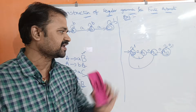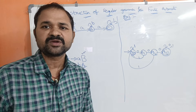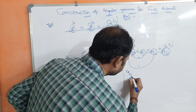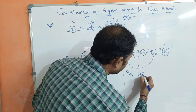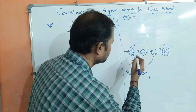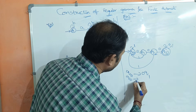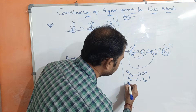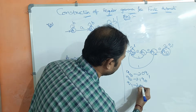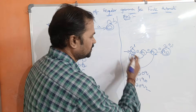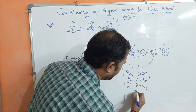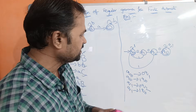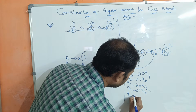We have to write regular grammar from this finite automaton. Regular grammar means by default it is right-linear grammar. So: q0 on 0 goes to q1, giving production q0 implies 0q1. q0 on 1 goes to q0, giving q0 implies 1q0. q1 on 0 goes to q2, giving q1 implies 0q2. q1 on 1 goes to q0, giving q1 implies 1q0.